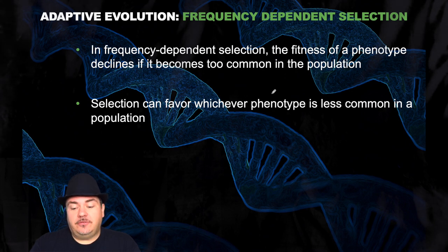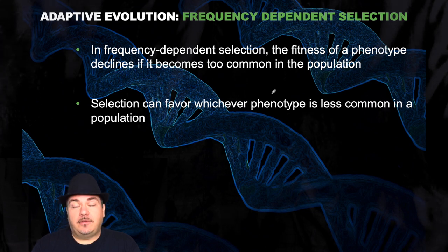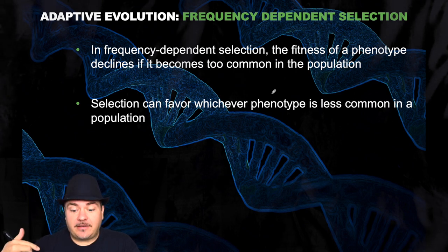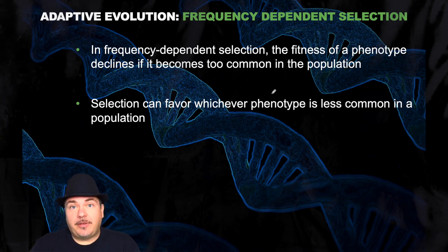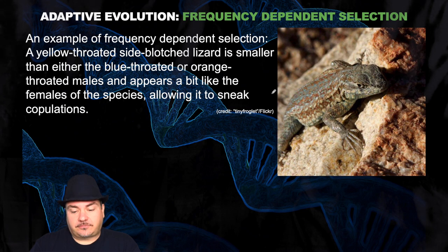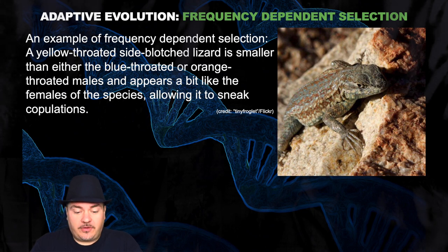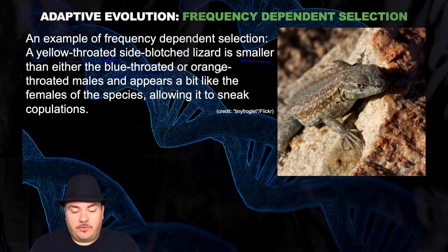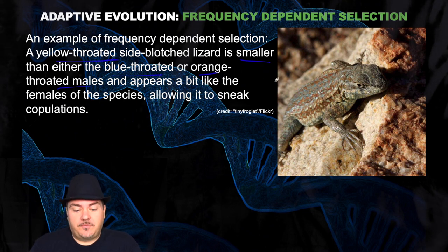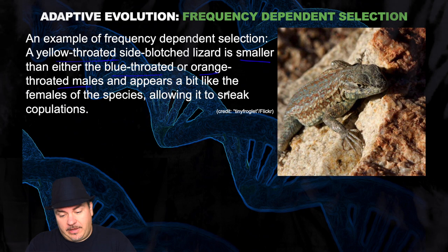We also have something called frequency-dependent selection — that's where the fitness of a phenotype declines if it becomes too common in a population. If you get a certain phenotype that becomes more and more common, it now becomes a disadvantage. Selection can favor whichever phenotype is less common in the population. One example of frequency-dependent selection is this lizard. Males can be larger or smaller size. The yellow-throated ones are smaller than either the blue or orange-throated males. The yellow-throated ones look more like females to the females, which allows these smaller males to basically sneak in and copulate with the females. So it becomes an advantage to have that smaller size, whereas most of them have the larger size.